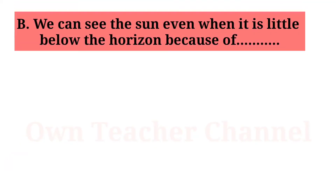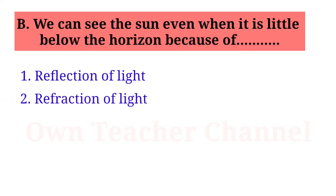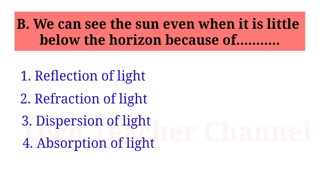(B) We can see the sun even when it is a little below the horizon because of: 1. Reflection of light; 2. Refraction of light; 3. Dispersion of light; 4. Absorption of light. The correct answer is 2: Refraction of light.